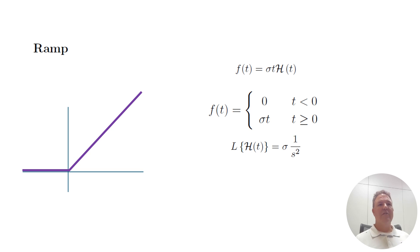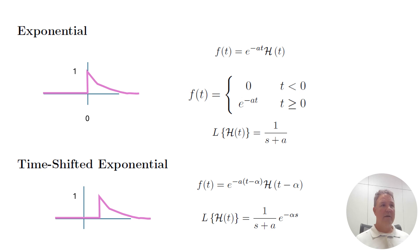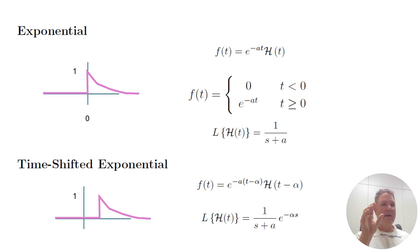For a ramp, the Laplace is one over s squared times the slope, and one over s squared times e to the minus alpha s if you shift that ramp into the future. The exponential has Laplace one over (s plus a). The exponential jumps from zero to one at time zero in our definition — it's the product of the size, e to the minus at, times the heaviside step. When we take the Laplace, we treat the whole product as a single basic Laplace function; we don't Laplace the exponential and the step separately. We take Laplace as a sum of basic Laplace functions: ramp plus delayed ramp, exponential plus step, exponential plus delayed exponential, and so on.